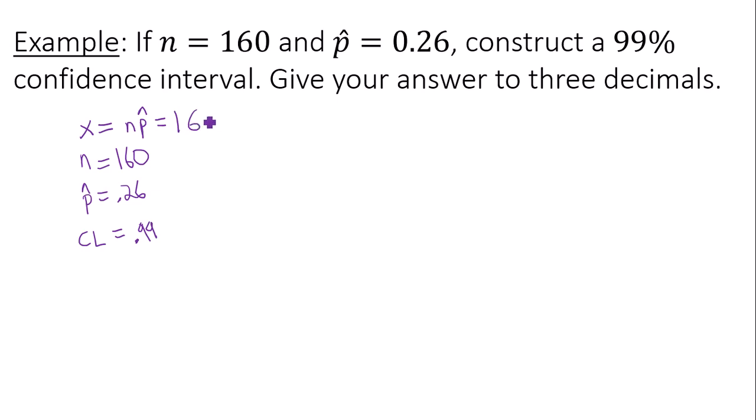So out of 160 of something, there were 0.26 or 26% that possessed a certain characteristic. 160 times 0.26 is going to give you 41.6.